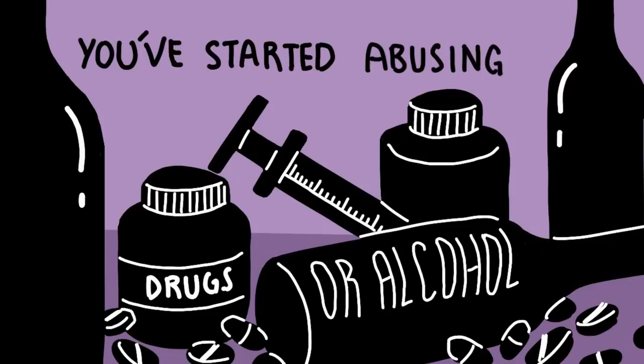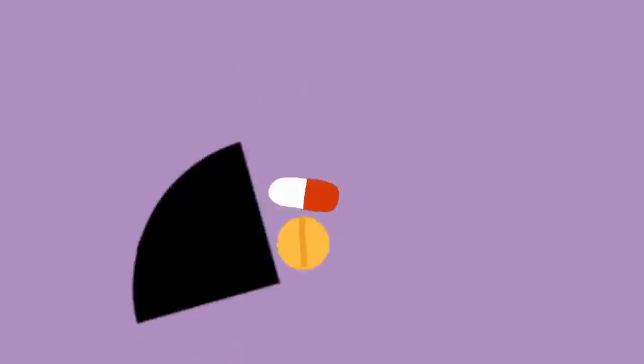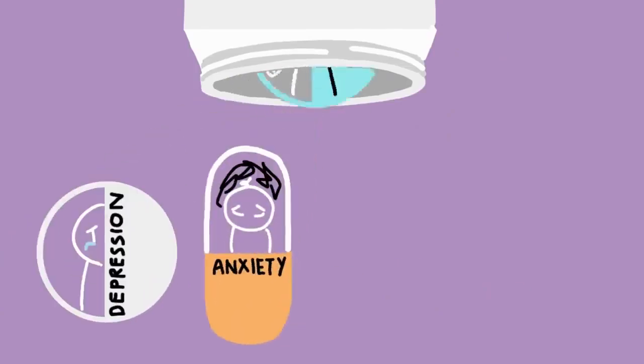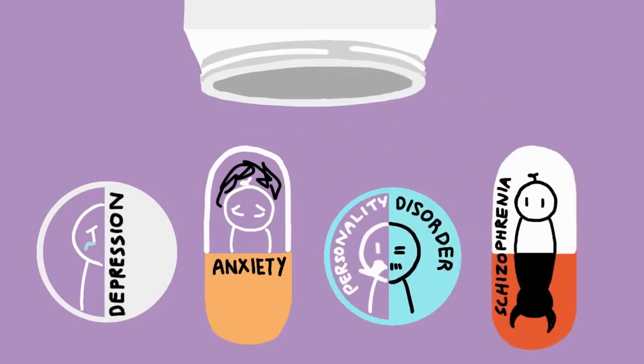Number 8: You've started abusing drugs or alcohol. According to mentalhealth.gov, 1 in 4, or 25%, of people who live with the symptoms of a mental illness use alcohol or drugs to self-medicate things like anger, anxiety, or mania. Experts believe individuals who suffer from depression, anxiety disorders, personality disorders, or schizophrenia are more likely to use drugs and alcohol as a coping mechanism than people diagnosed with other mental illnesses.